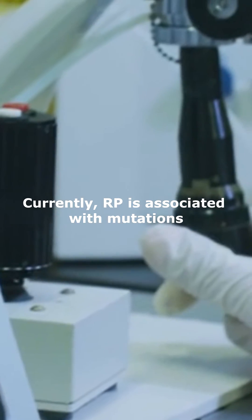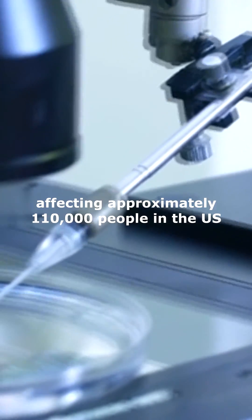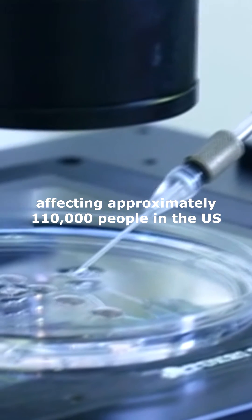Currently, RP is associated with mutations in more than 100 genes, affecting approximately 110,000 people in the US.